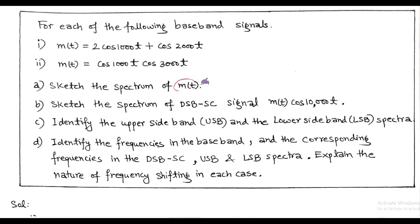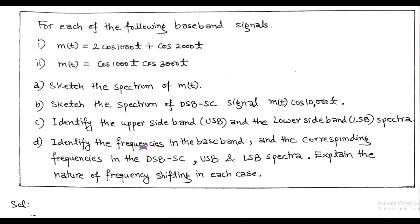First, sketch the spectrum of MT. Second, sketch the spectrum of the double sideband suppressed carrier signal, that is MT times cos(10000t). Third, identify the upper sideband and lower sideband spectra. And D, identify the frequencies in the baseband and the corresponding frequencies in the DSB-SC upper sideband and lower sideband spectra. Also explain the nature of frequency shifting in each case.